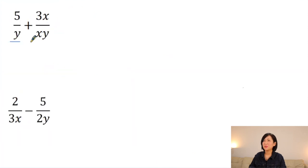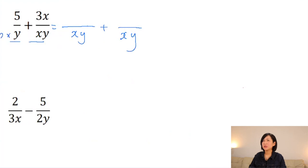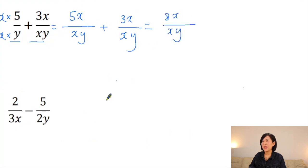This is more tricky because you've got different variables in the denominator. Still the same process — find the common denominator. Yes, xy can be the common denominator. To change x into xy, multiply by y on the bottom and on the top, giving 5y as your numerator. Copy down 3x since it's the same, so the new denominator is xy and the numerator is 8x... wait, 5y + 3x over xy.